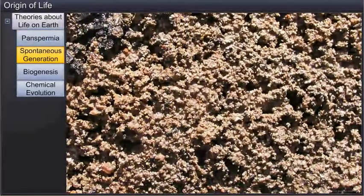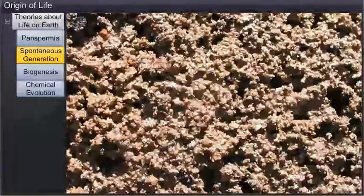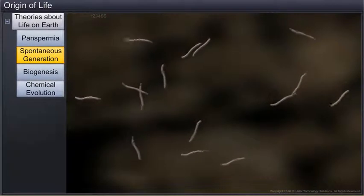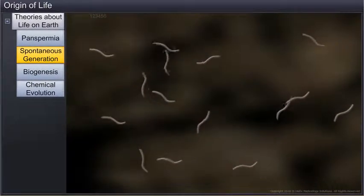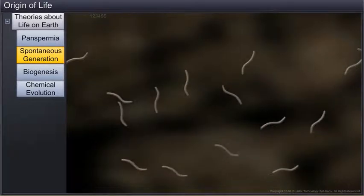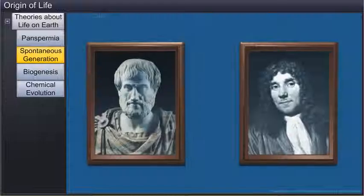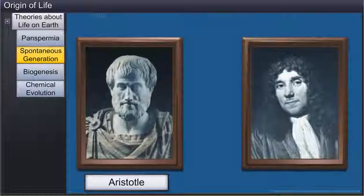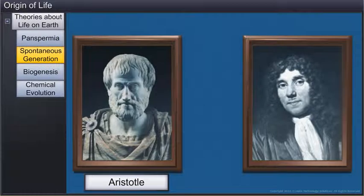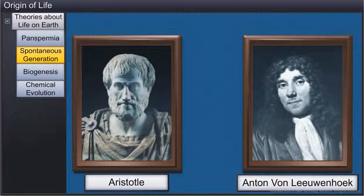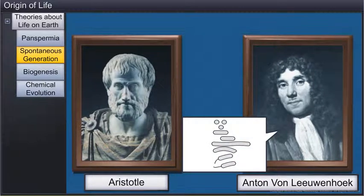Another belief was that life arose from inanimate things. The theory of spontaneous generation assumed that life came out of non-living, decaying, and rotting matter, such as stones, straw, and mud. Even famous Greek thinker and philosopher Aristotle believed in this theory. In fact, this theory was used to explain even Anton von Leeuwenhoek's findings of animalcules, using the simple microscope.